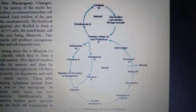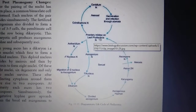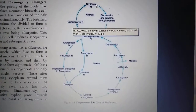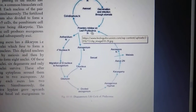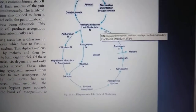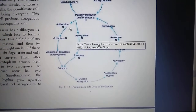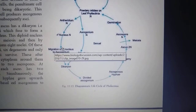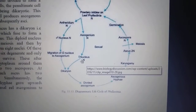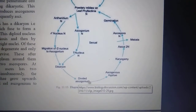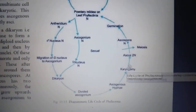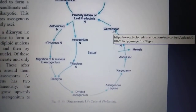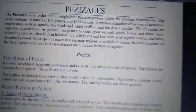You can see the life cycle: asexual reproduction produces powdery mildew on the leaf — Phyllactinia on leaf. Then karyogamy takes place and ascospores germinate, and again the infection cycle continues. The next order is Pezizales.